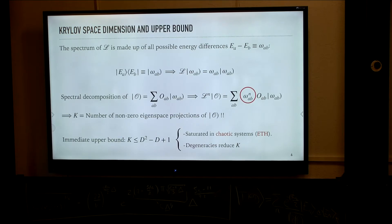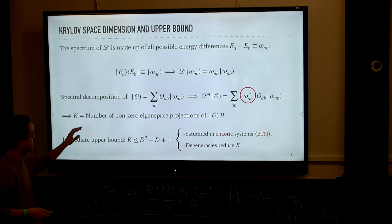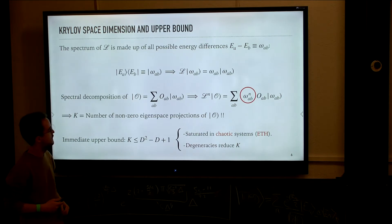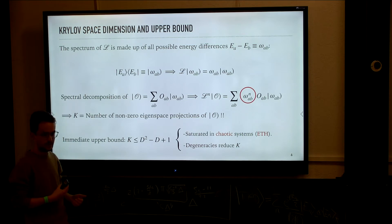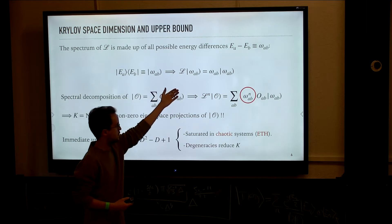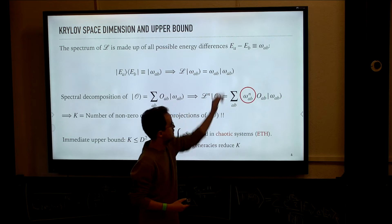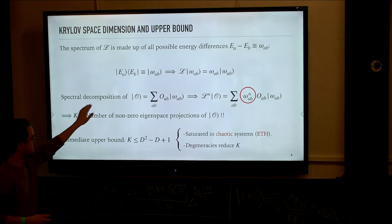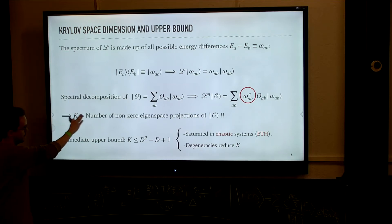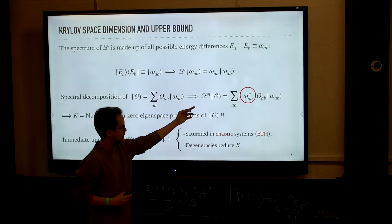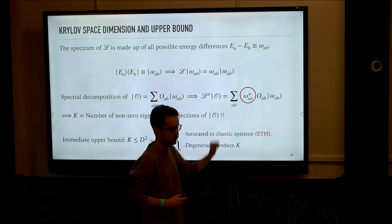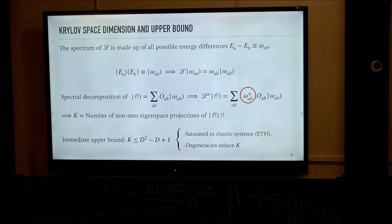By definition, Krylov space is the minimal subspace of operator space that contains the operator O(t) at an arbitrary time. Because operator space has a finite dimension, even though we are considering the span of an infinite number of elements, only a finite number should be linearly independent. We can find that dimension by a simple computation: we need a spectral decomposition of the operator in terms of the eigenstates of the Liouvillian itself. Taking ket-bra's of energy eigenstates of the Hamiltonian gives states in operator space that are eigenstates of the Liouvillian, outputting the corresponding energy difference. Therefore the Krylov space dimension equals the number of non-zero eigenspace projections of the initial condition O.